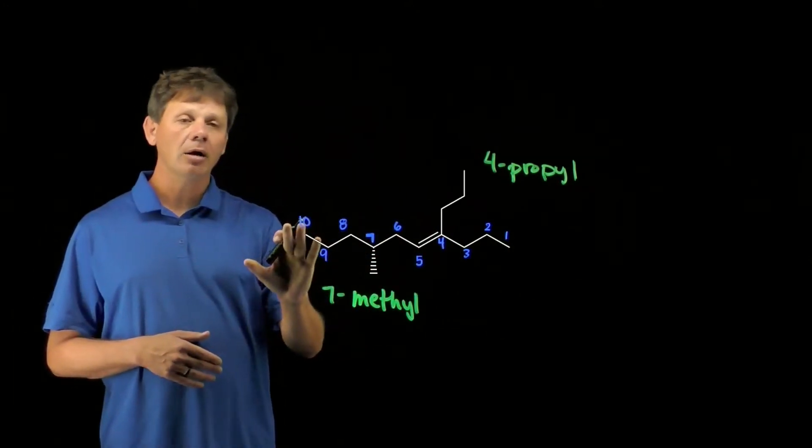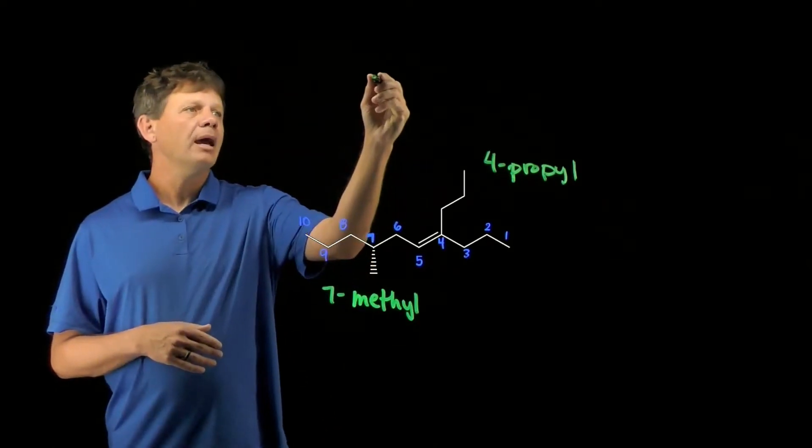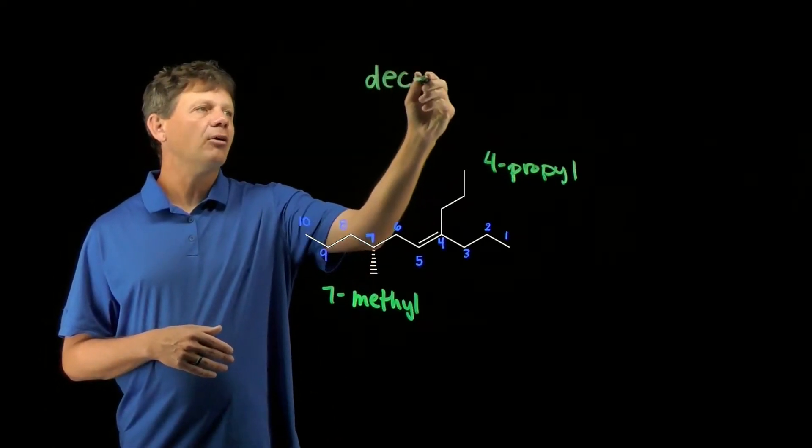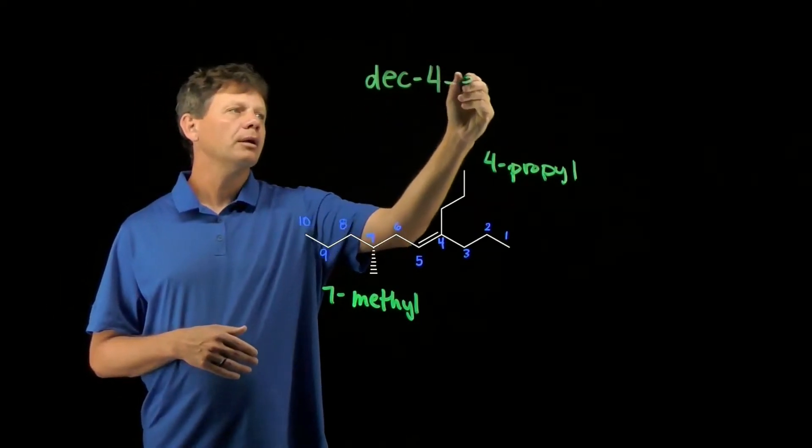In terms of the ten carbon chain, it's going to be dek. We're going to use the prefix dek and we're going to indicate that the alkene is at the four carbon by calling it dek-4-ene.